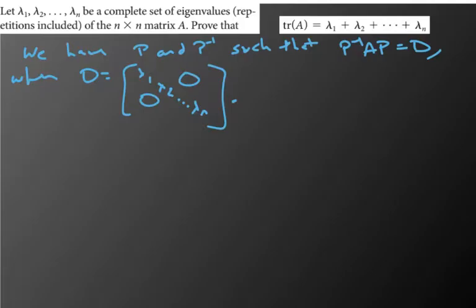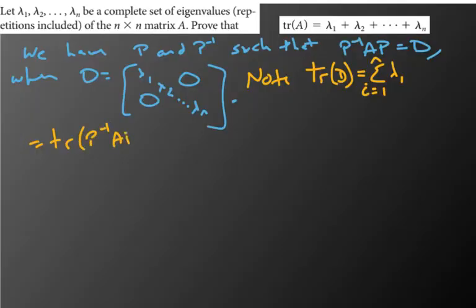So then I'm basically just going to use trace properties. Note that the trace of D, which is going to equal the sum of all those eigenvalues, the sum of all these should equal the trace of P inverse AP.